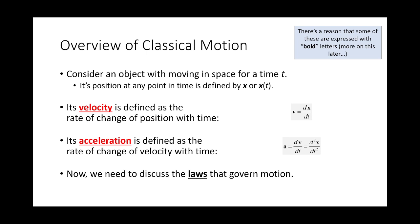So I want to start off by talking about classical motion — sort of the day-one stuff you talk about in physics. We're going to consider just an object that's moving across some region of space for some time t. We might model that object's position by some function x, or x of t. The velocity of that particle is defined by its change of position over time. Calculus tells us that instantaneous rates of change are defined by derivatives, so the velocity of a particle is the derivative of its position with respect to time.